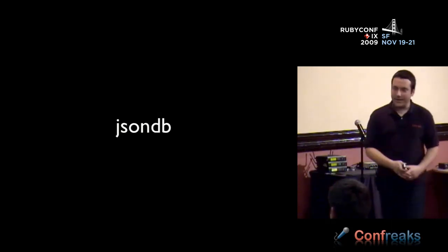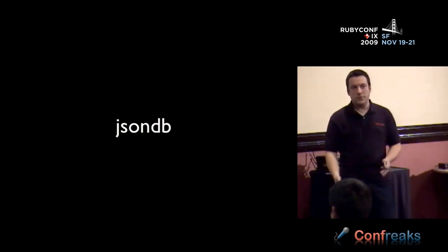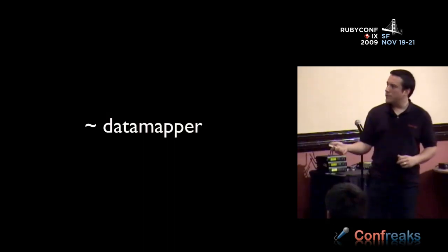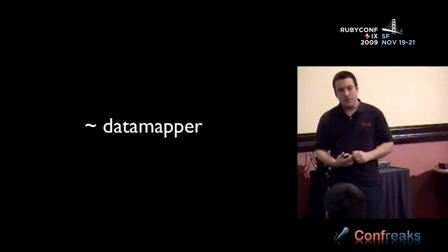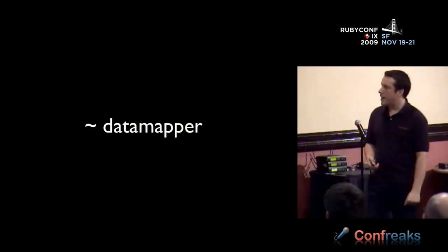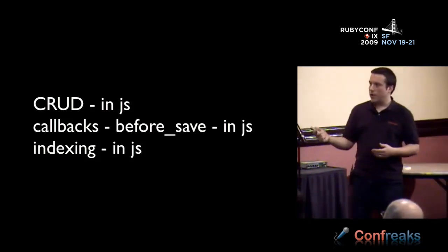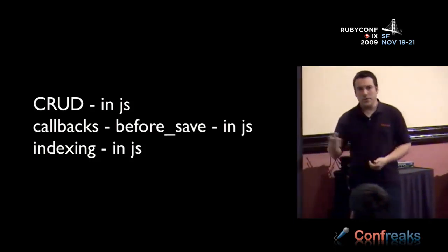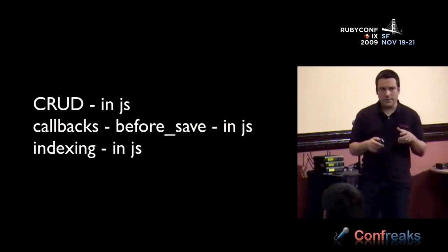This spawned yet another project — extracting everything in CloudKit that was at the database layer on down into its own JavaScript library. It sort of models itself after DataMapper. I haven't actually open-sourced this piece yet, but maybe by the end of the conference I'll get enough hacking done to do so. I was previously using Node.js and I'm in the middle of ripping out some of the assumptions I had in there. Modeling itself after DataMapper or ActiveRecord, you do all your create, read, update, and deletes in JavaScript. All your callbacks are also in JavaScript — you can attach before saves, after creates, things like that. And your indexing also lives inside the database in JavaScript.